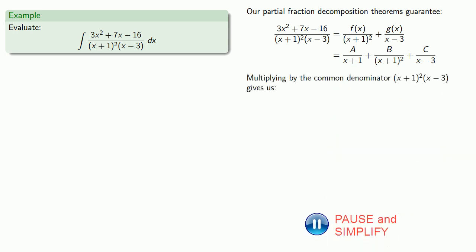Multiplying by our common denominator, that'll give us our equation, which we want to be true for all values of x. Since the equation is supposed to be true for all values of x, it has to be true for any value of x that we choose.